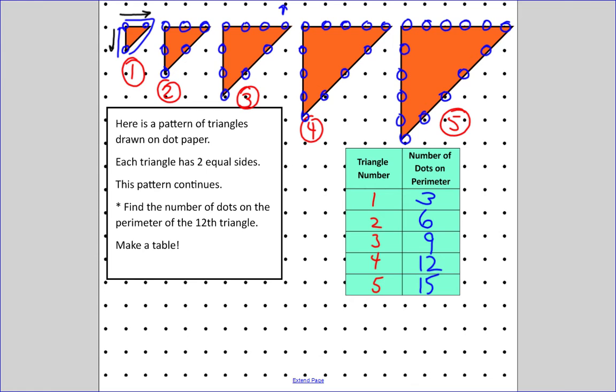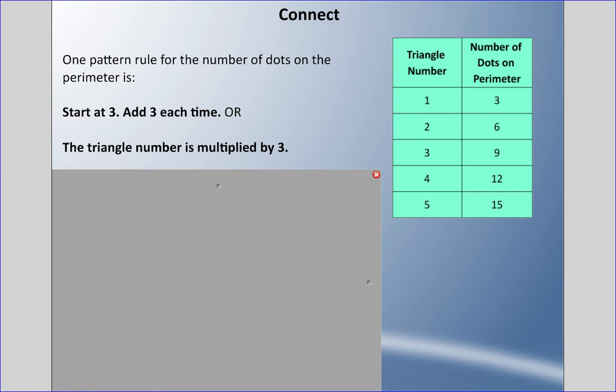One pattern rule for the number of dots on this perimeter is: we start at three, we add three each time. In our table here we can see we're starting at three, and each time we're adding three. Or we could say the triangle number is multiplied by three - one times three, two times three, three times three, four times three, five times three. That is another way we could say this.